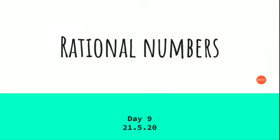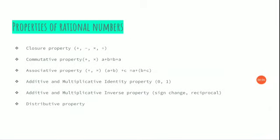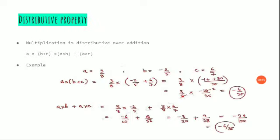Namaste children. Previously we discussed the first five properties of rational numbers. Today we are going to learn about the sixth property, the distributive property. What is distributive property? We are going to distribute a value to two more values. There are going to be two basic operations involved in it.